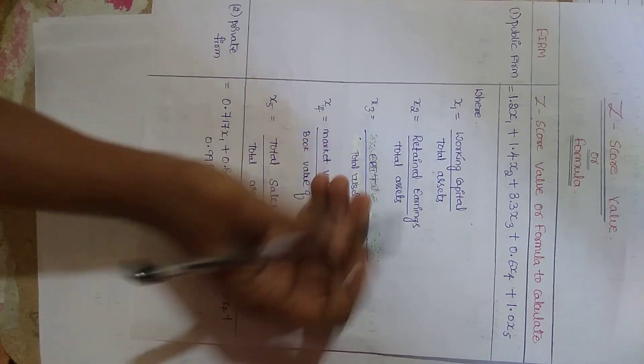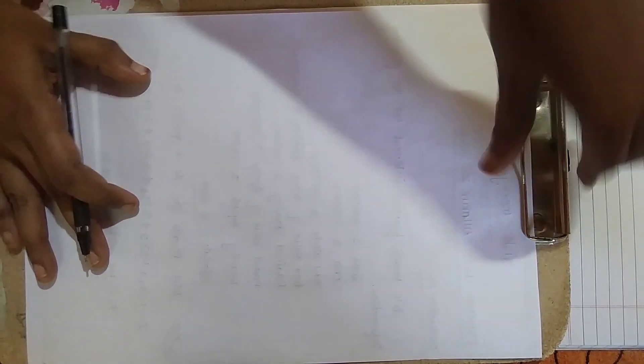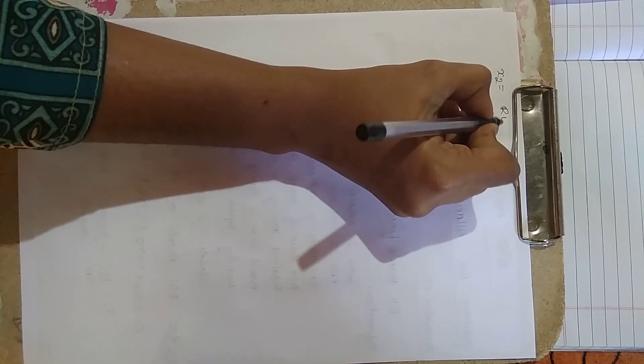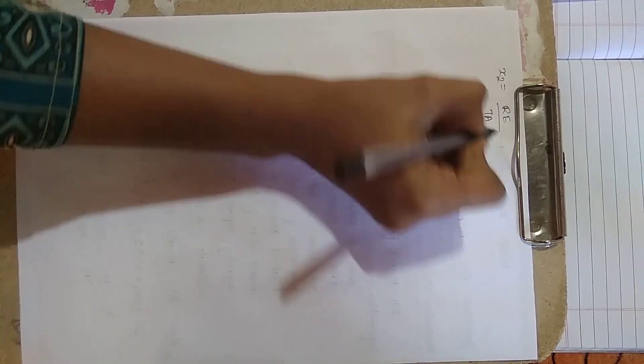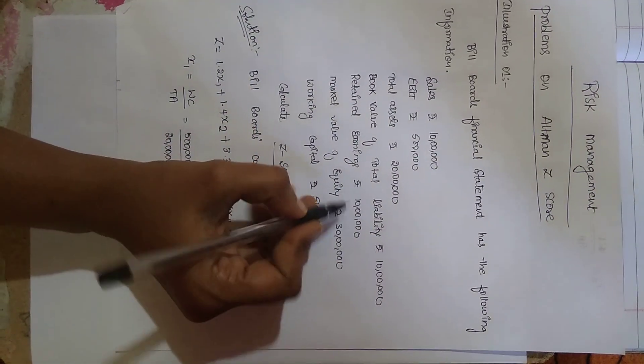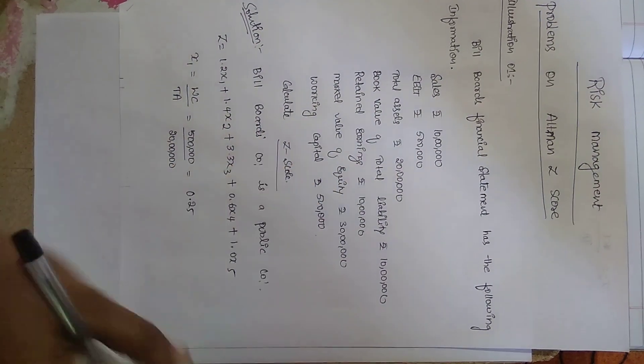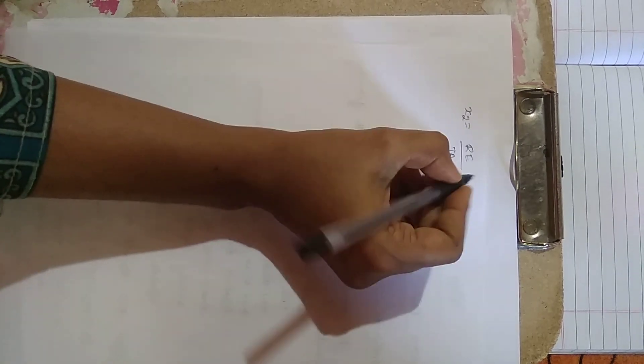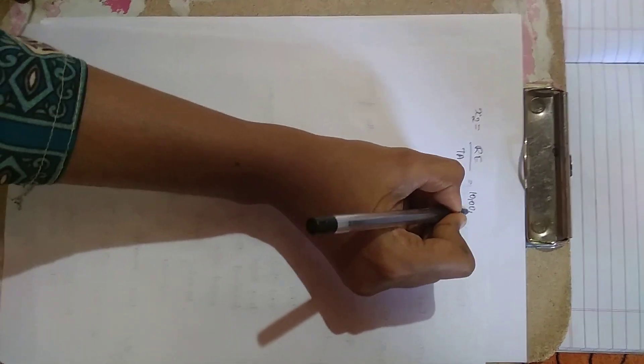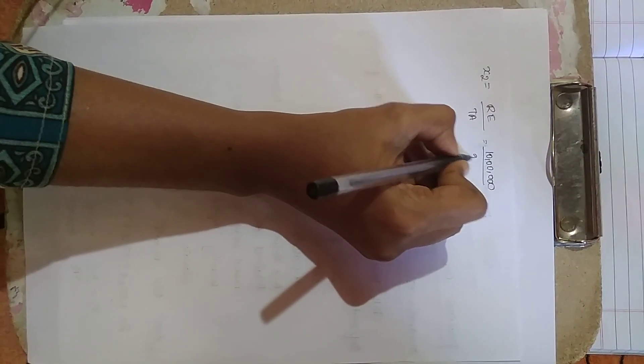Next is X2. For X2, the formula is retained earnings divided by total assets. The given retained earnings is 10 lakhs and total assets is 20 lakhs.